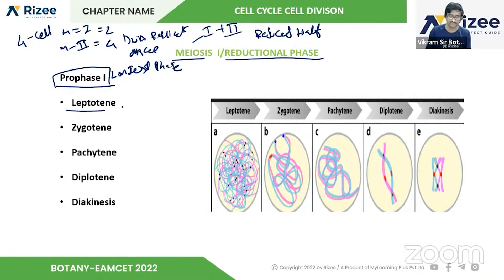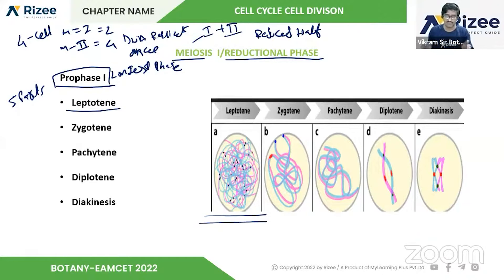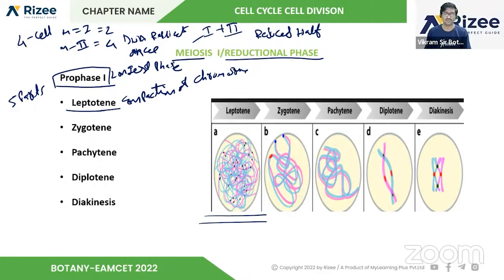Prophase 1 is further divided into five sub-stages. In the leptotene stage, compaction of chromosomes occurs. Compared to the remaining sub-stages, leptotene is the shortest phase — it involves just the compaction of chromosomes.